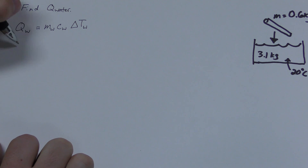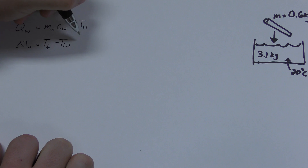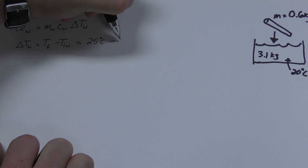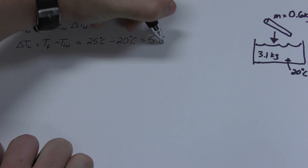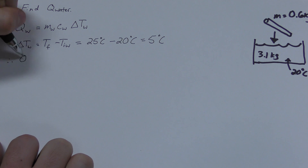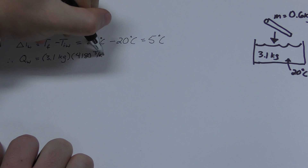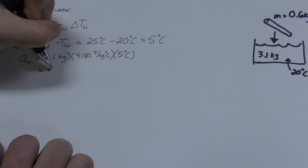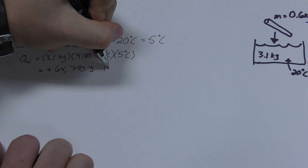Q equals MC delta T. First, we need to find delta T. Delta T is T final minus T initial. So if we plug in 25 degrees Celsius and 20 degrees Celsius, we get our delta T to be 5 degrees Celsius. If we plug that into our equation with the other information, we get an energy gain of 64,790 joules.